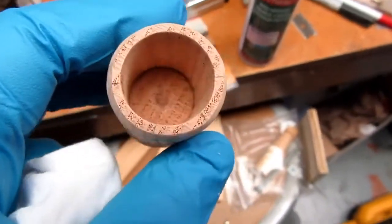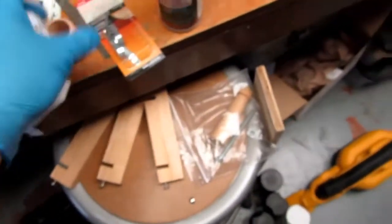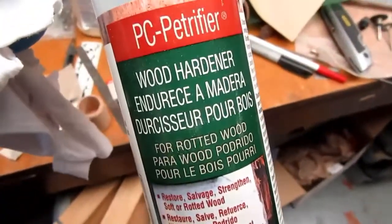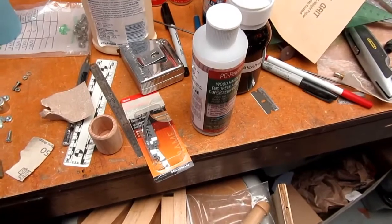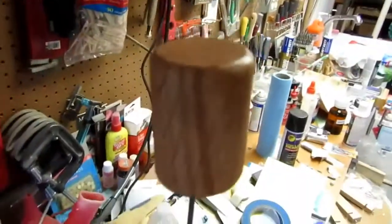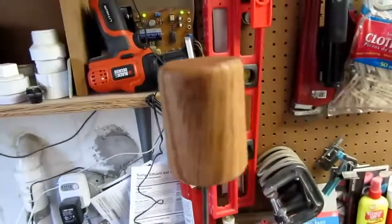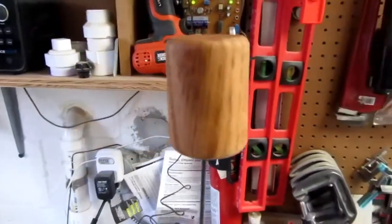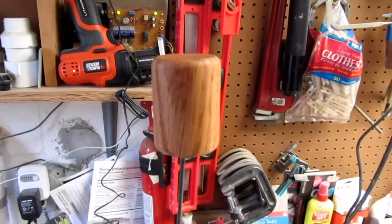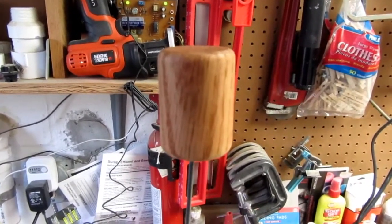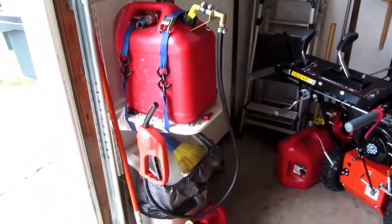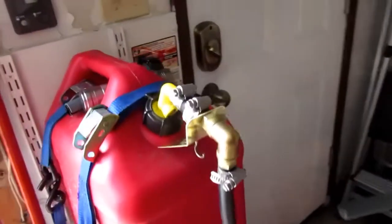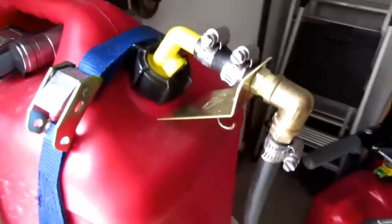You know, I want to seal this with something, but I don't want to use varnish. I'm just going to use my PC Petrifier wood hardener. I think that'll work—soak in, give it some protection. It seems to have soaked in and even made it look a little better. I'm going to give it just a few minutes to dry, take it out, and give it a final test fit.